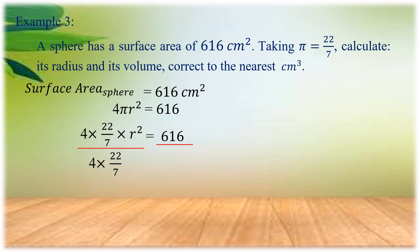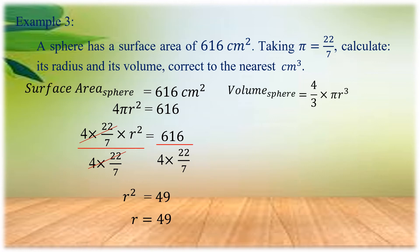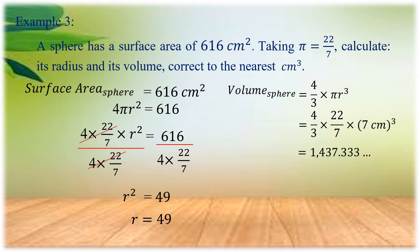Dividing both sides by 4 times 22/7, we cancel to get R squared equal to 49. The square root of 49 is 7, so the radius equals 7 centimeters. Now solving for the volume using 4/3 times pi times R cubed, substituting pi as 22/7 and R as 7 cm, we get 4/3 times 22/7 times 7 cubed, which equals 1437.333. Correct to the nearest cubic centimeter, the volume is 1437 cubic centimeters.